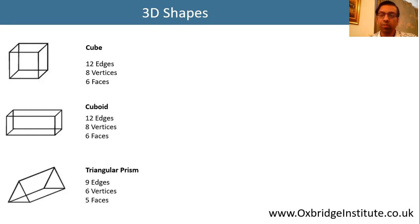We have a triangular prism which has 9 edges, 6 vertices, and 5 faces.